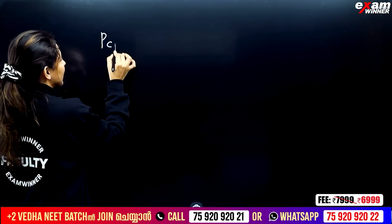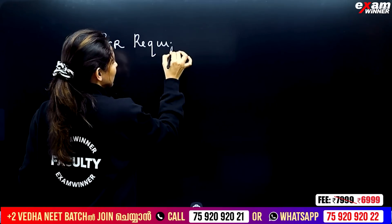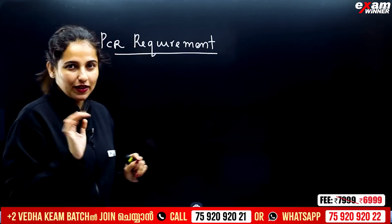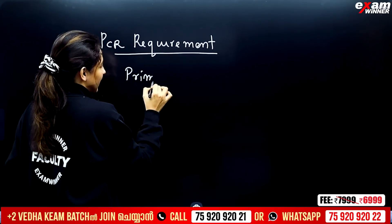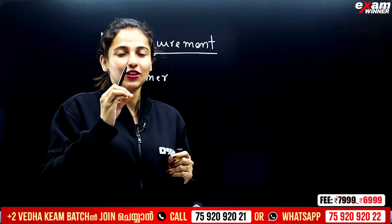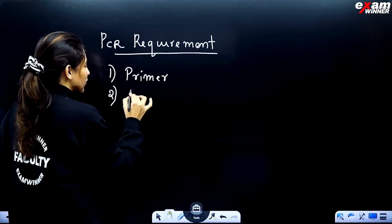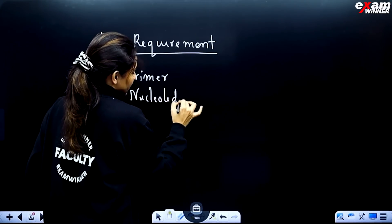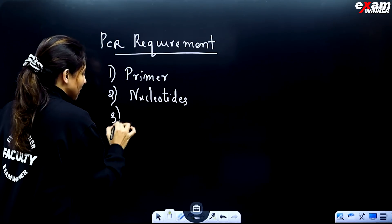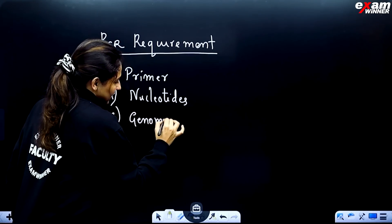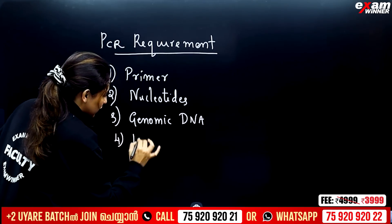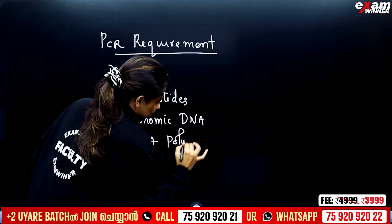Now, what are the PCR requirements? For PCR we need: a primer, nucleic acid — the DNA is the nucleic acid, made from the basic unit nucleotides — genomic DNA, and DNA polymerase enzyme. Those are the four items required for PCR.